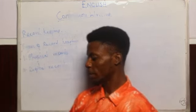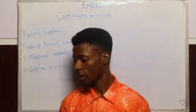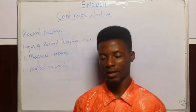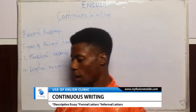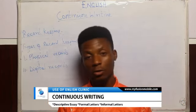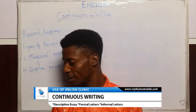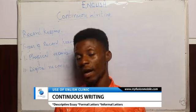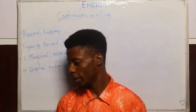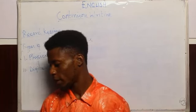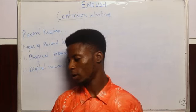Physical records also include certificates, legal forms, personal diaries, etc. The digital records are records stored electronically in devices such as CD-ROMs, flash disks, flash drives, magnetic tapes, etc. The information kept in this type of record is generated through electronic devices such as computers and phones.